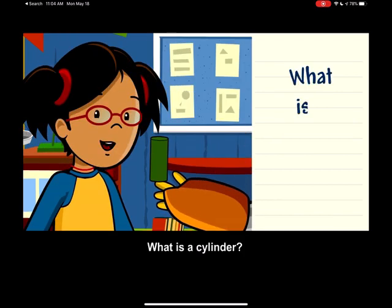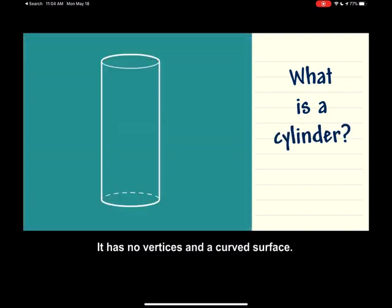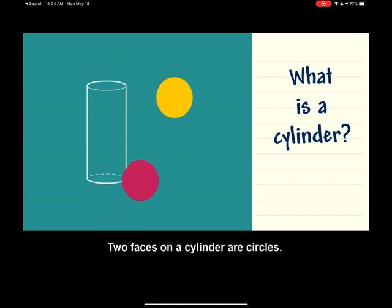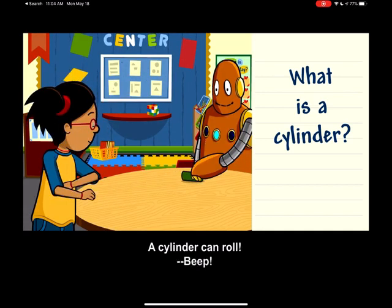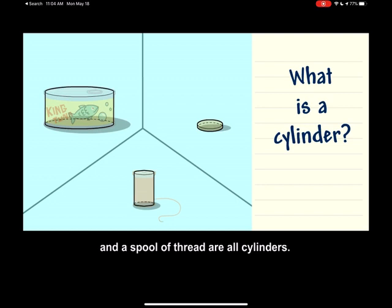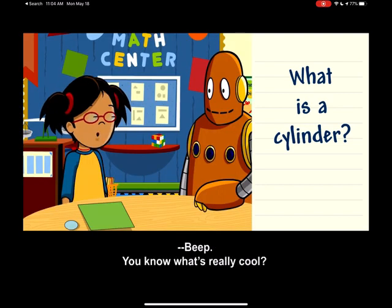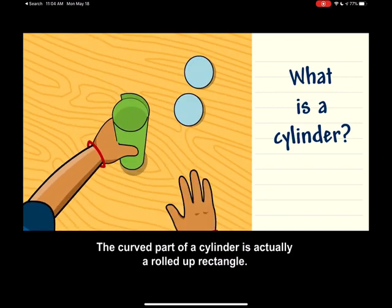What is a cylinder? It has no vertices and a curved surface. Two faces on a cylinder are circles. A cylinder can roll. A can of tuna, a penny, and a spool of thread are all cylinders. You know what's really cool? The curved part of a cylinder is actually a rolled-up rectangle.